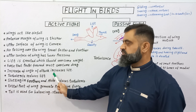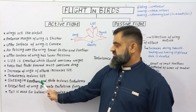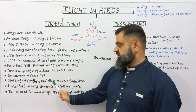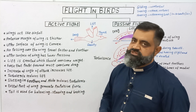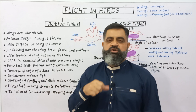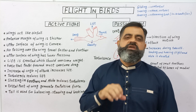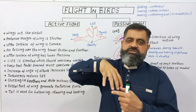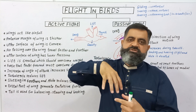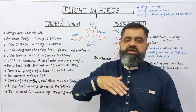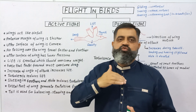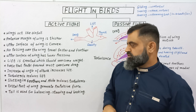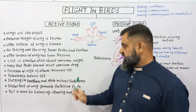To reduce turbulence, wings have slotting. Slotting in the wings and the alula together reduce turbulence. First, the alula is raised, and secondly, the wings have slots — gaps between their feathers — which help to move air away and reduce turbulence.